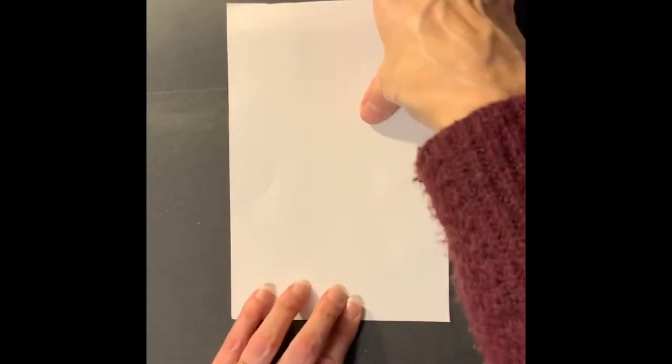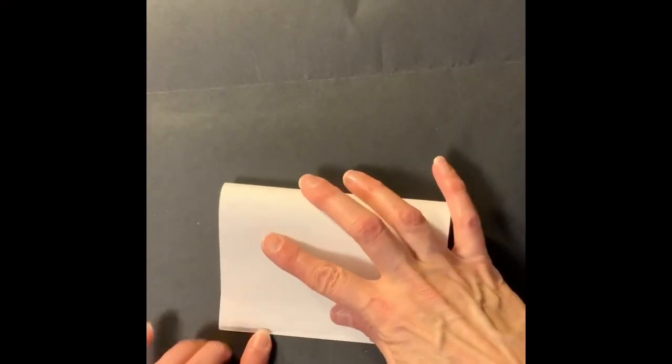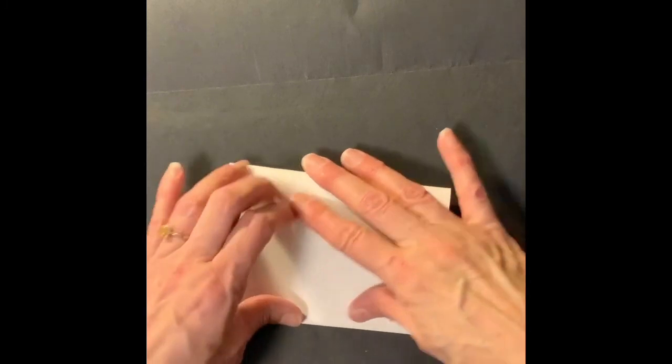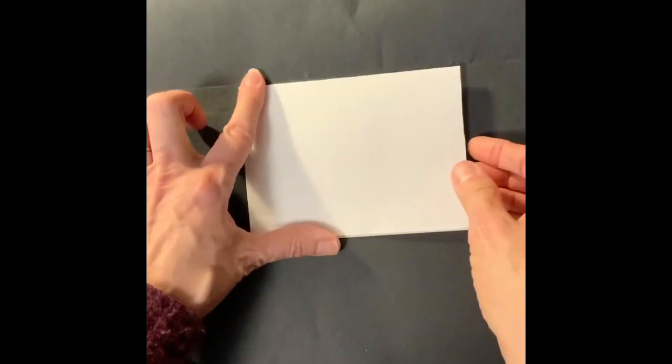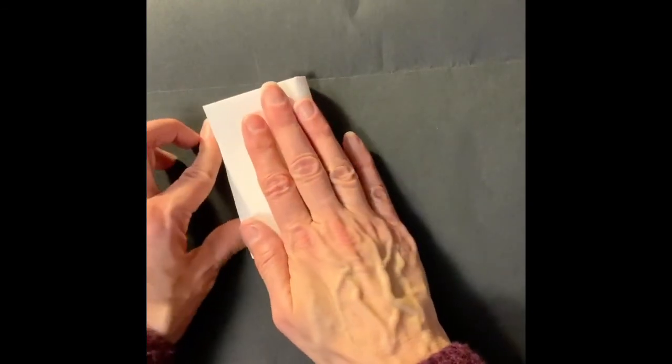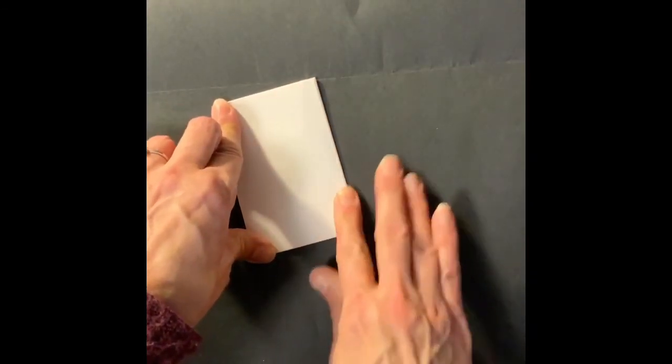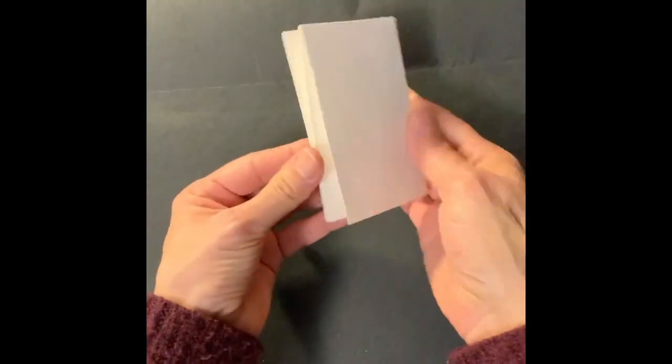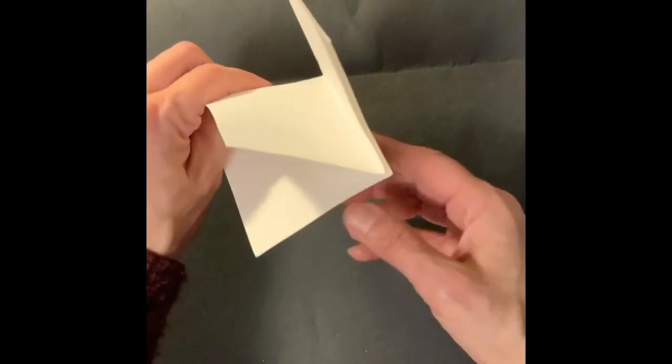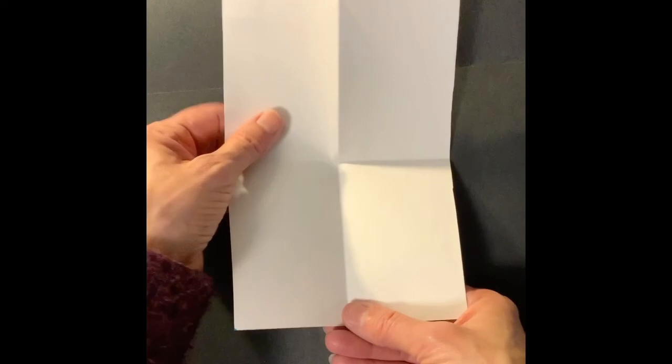Go ahead and begin by folding your paper in half and then in half again. So you want to have four sections to your paper. This is going to be very symmetrical.